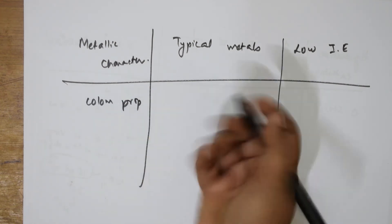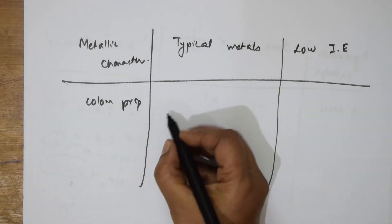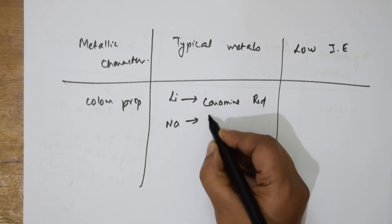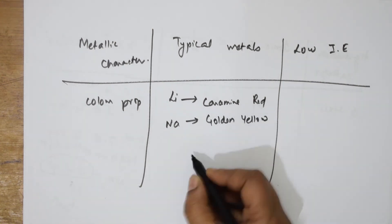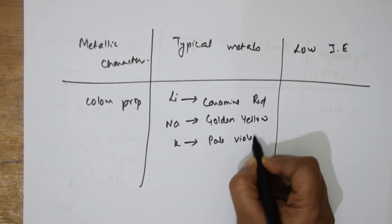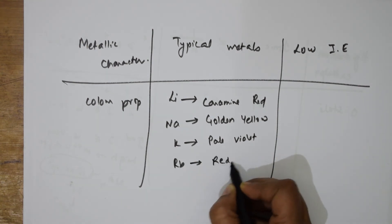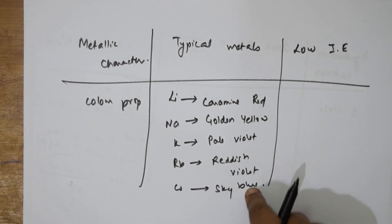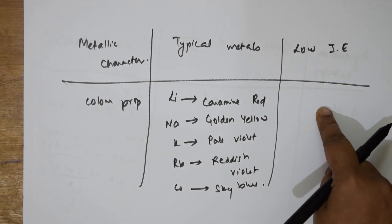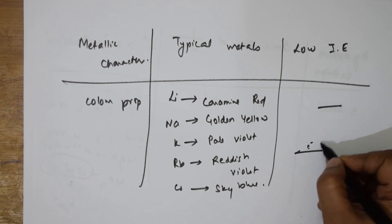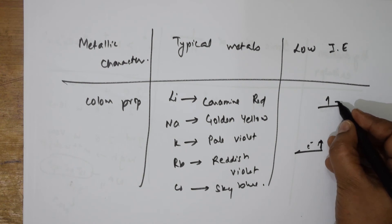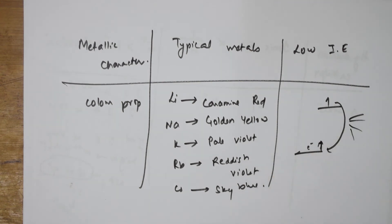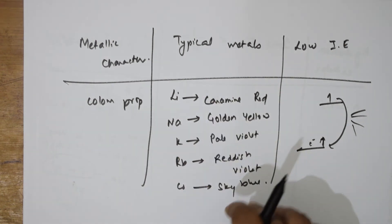Alkali metals show a color property in the flame test. Lithium gives carmine red, sodium gives golden yellow, potassium gives pale violet, rubidium gives reddish violet, and cesium gives sky blue color. Why do they show these colors? Because electrons jump from the lower level to the higher level, then jump back to the ground state, absorbing light of a particular frequency and emitting it — that is why they show various colors.